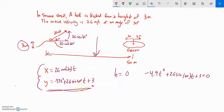That's just a quadratic. My a is negative 4.9, my b is 26 sine 30, and my c is 3. I could run that through the quadratic equation. I'm just going to enter it on my calculator.